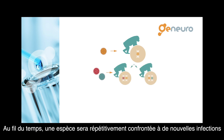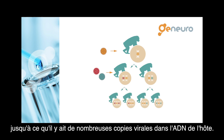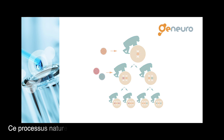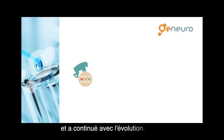Over time, a species will be confronted repeatedly to new infections, and this process will continue many, many times over, resulting in the presence of multiple endogenous virus copies in the DNA of the host. This natural process started at the time of our primate ancestors, but it continued with evolution.